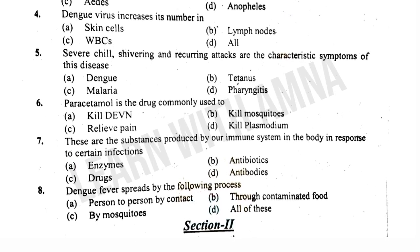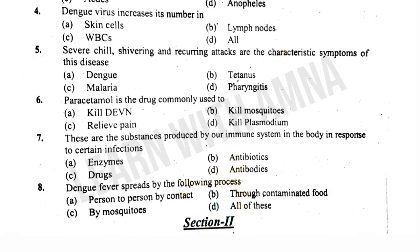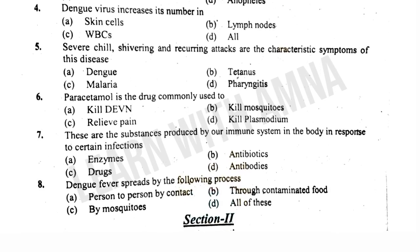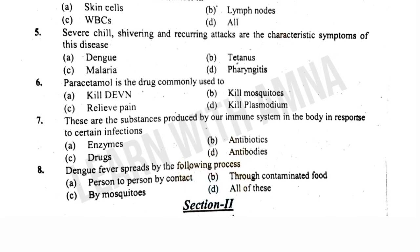Dengue fever is spread by the following process — A) Person to person by contact. B) By contaminated food. C) By mosquitoes. The correct answer is C.